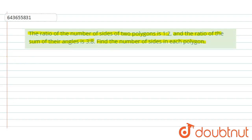So first of all, let us assume the number of sides in two polygons. Let us take the number of sides be x and 2x as they are in the ratio 1:2. So we can take the number of sides in the first polygon to be x and in the second polygon to be 2x.